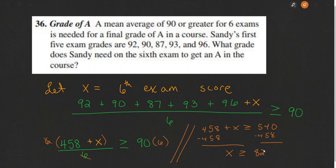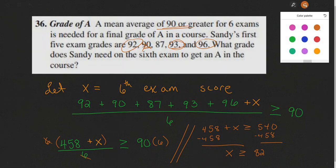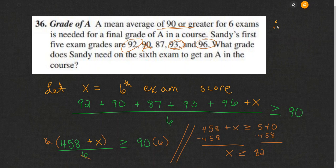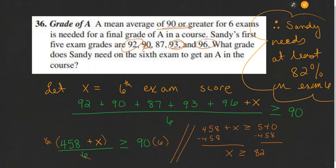Looking back, does this answer make sense? Many of the scores — 93, 96, 92 — are all above the cutoff for an A, and the 90 is right on the line. Only one score is below an A. So Sandy has created some margin of error, meaning the 6th exam score could be lower than an A. An answer of 82 seems very reasonable. Therefore, Sandy needs at least 82% on exam 6. Don't forget to finalize your problem by stating the answer.